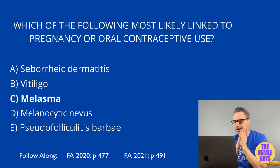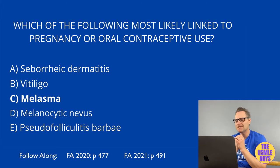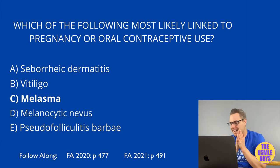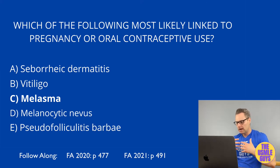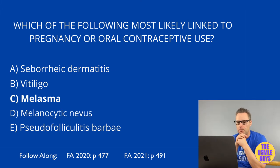Melasma is a type of acquired hyperpigmentation most likely to occur as a result of pregnancy or OCPs. Vitiligo is characterized by irregular patches with a complete lack of pigmentation due to destruction of melanocytes in those affected areas. This is most obvious in someone with darker skin, where the areas lacking melanin become much more pronounced.